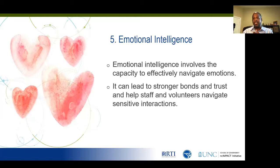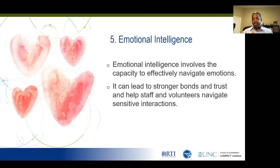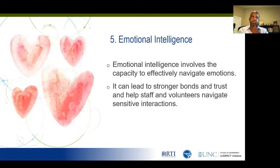And that fifth and final principle is around emotional intelligence. Emotional intelligence really involves the capacity to effectively navigate emotions, and that's something that folks really need to spend time understanding — what it looks like in practice, what kind of trainings would you need to fully understand that. This can lead to stronger bonds and trust, and really help staff and volunteers navigate sensitive interactions. We understand that working with formerly incarcerated individuals is not easy. Understanding some of the rationale and reasons for why they end up in the situations they were in and really giving them the opportunity to make changes in their life — emotional intelligence is critically important. That represents really the five principles that we think are critically important to doing this work before you ever begin to implement a social capital strategy.